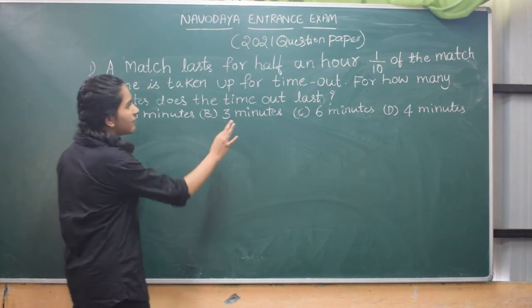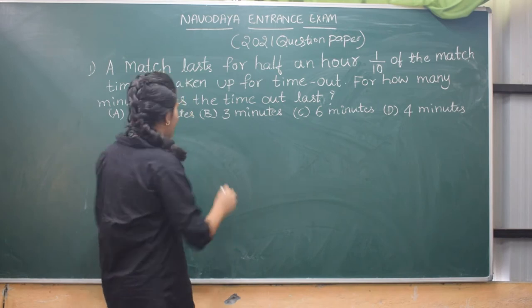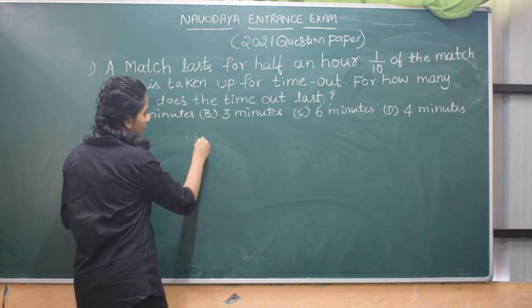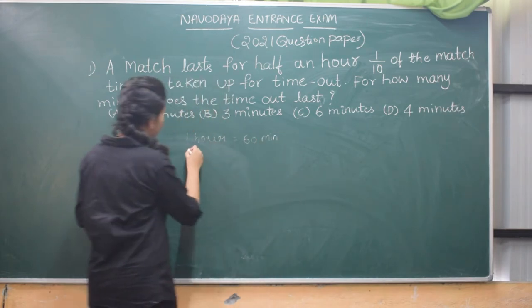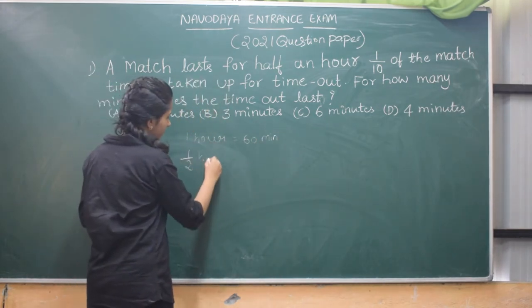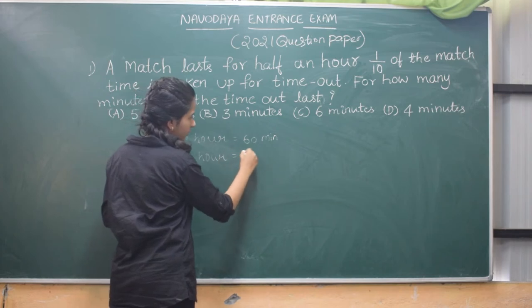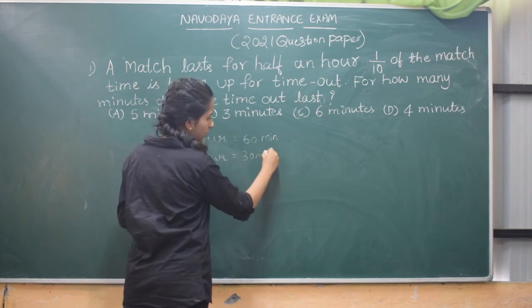So the total match is for half an hour. That means one hour is equal to 60 minutes, so half an hour is equal to 30 minutes. We all know that.